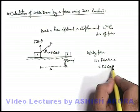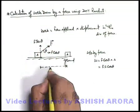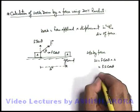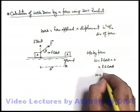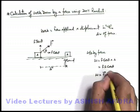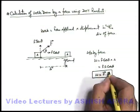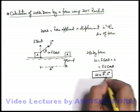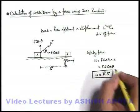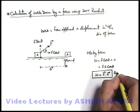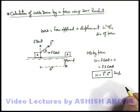Here θ is the angle between the force vector and the displacement vector, so we can write this work as the dot product W = F·s. Given the force vector and displacement vector, directly by taking their dot product we can find the work done by the force. The unit of work is joule, when force is in newton and displacement is in meters.